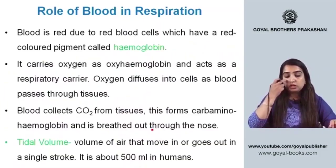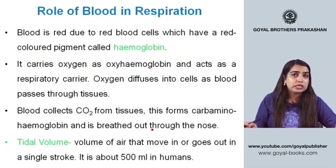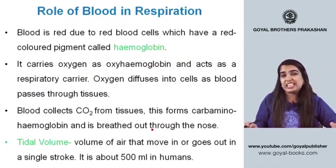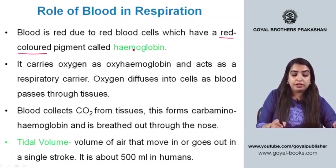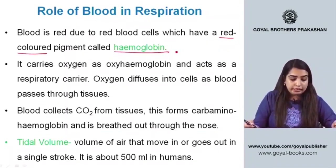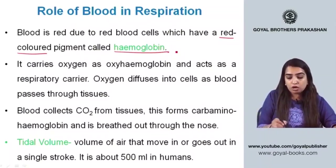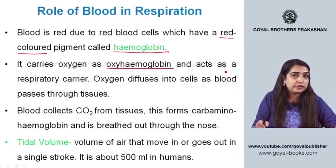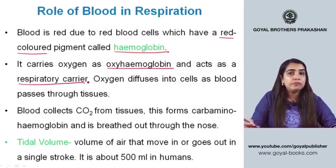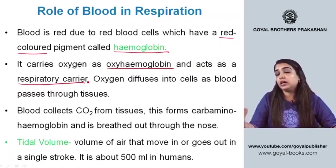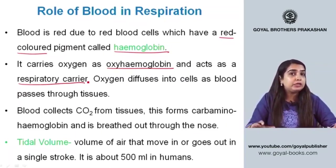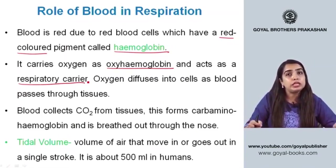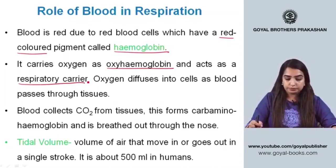Blood is red in color due to the presence of a red-colored pigment called hemoglobin. Hemoglobin carries oxygen in the form of oxyhemoglobin — it acts as a respiratory carrier, transporting oxygen to all the cells of the body. There are millions of cells in our body, all requiring this oxygen.